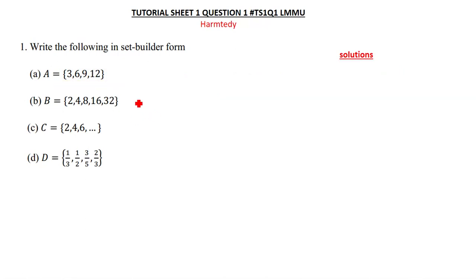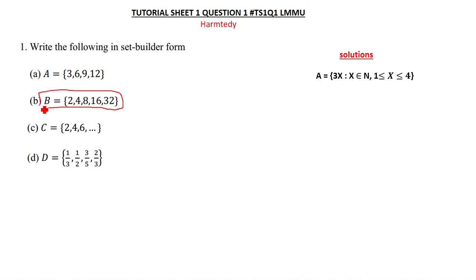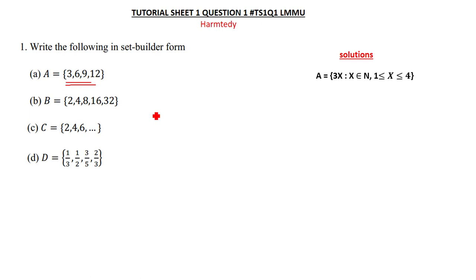The same applies to the other questions — you do the same. For the second one, to find the formula you can use what is called the inspection method. If you've done additional mathematics before, you can also use arithmetical progressions (AP) or geometrical progressions (GP) to find the formula.